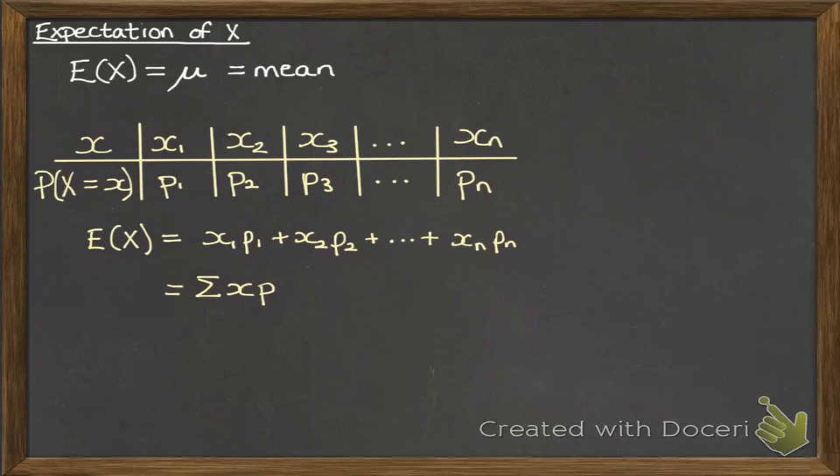So we take x1, we times it by its probability p1, x2 times its probability p2, and so on, and then find the sum.